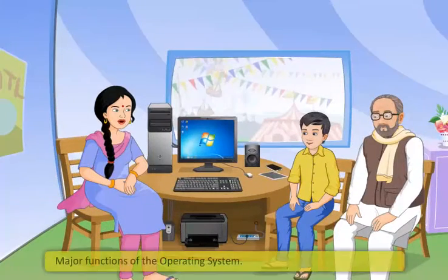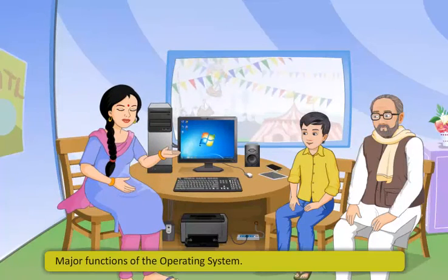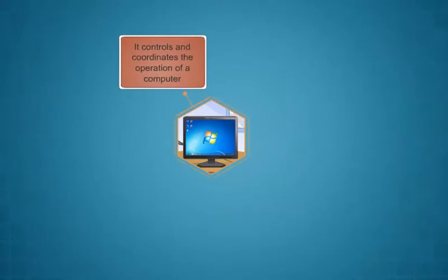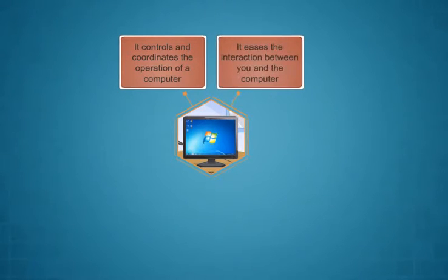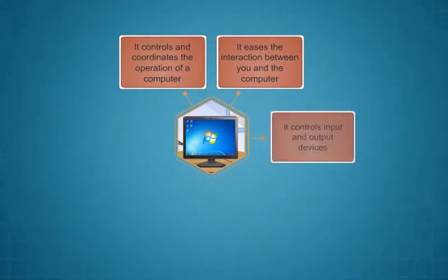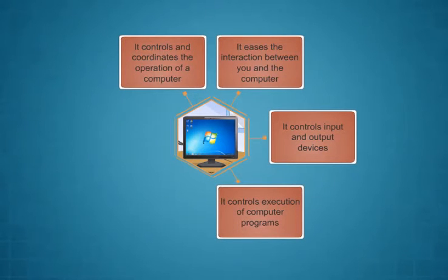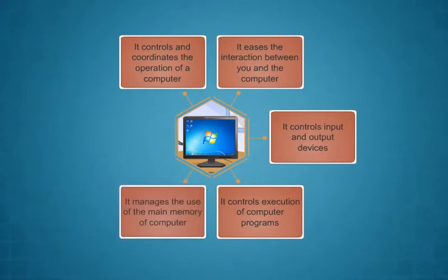The major functions of the operating system are: it controls and coordinates the operation of a computer, it eases the interaction between you and the computer, it controls input and output devices, and it controls the execution of computer programs.